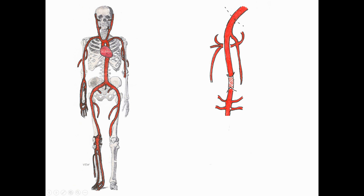The popliteal artery gives off some genicular branches — one to each quadrant: superior lateral, superior medial, inferior medial, and inferior lateral genicular arteries. These surround the knee and form an anastomotic network.